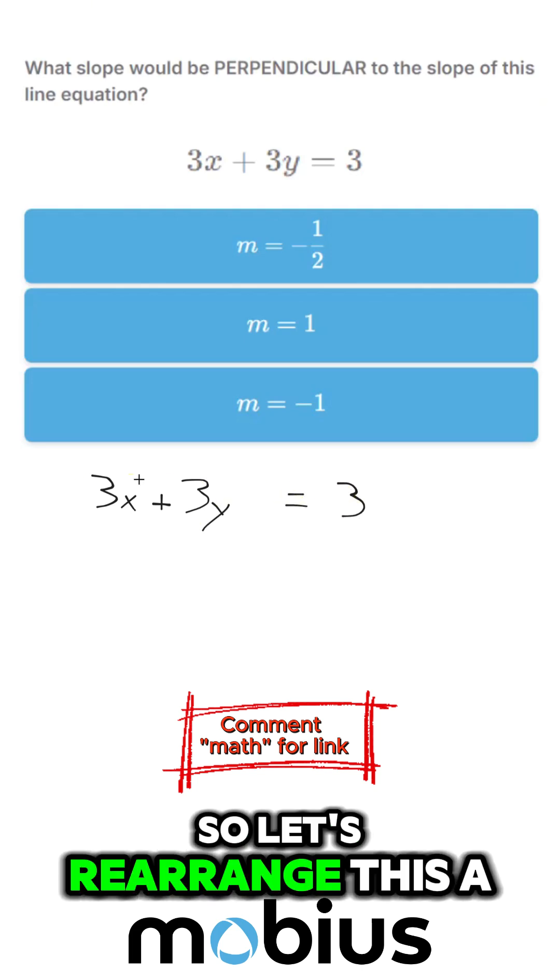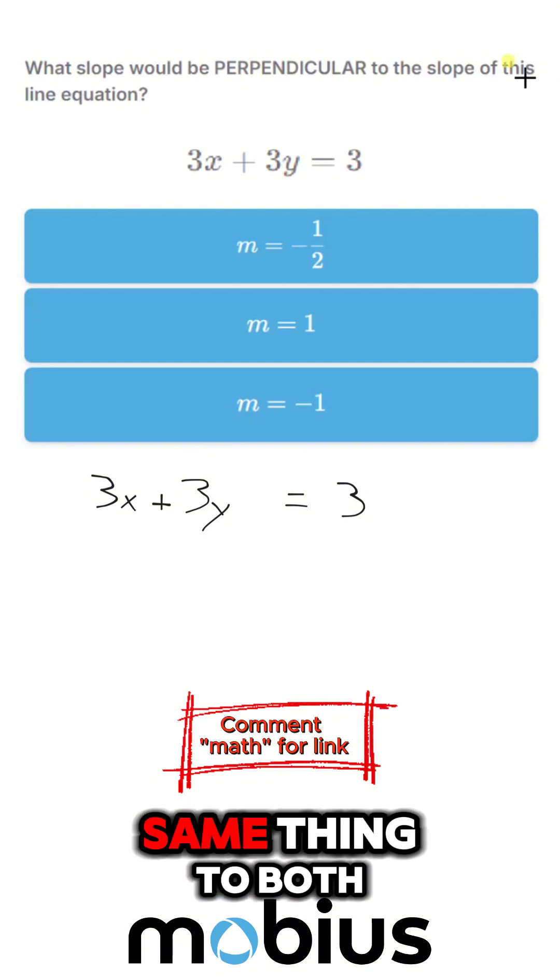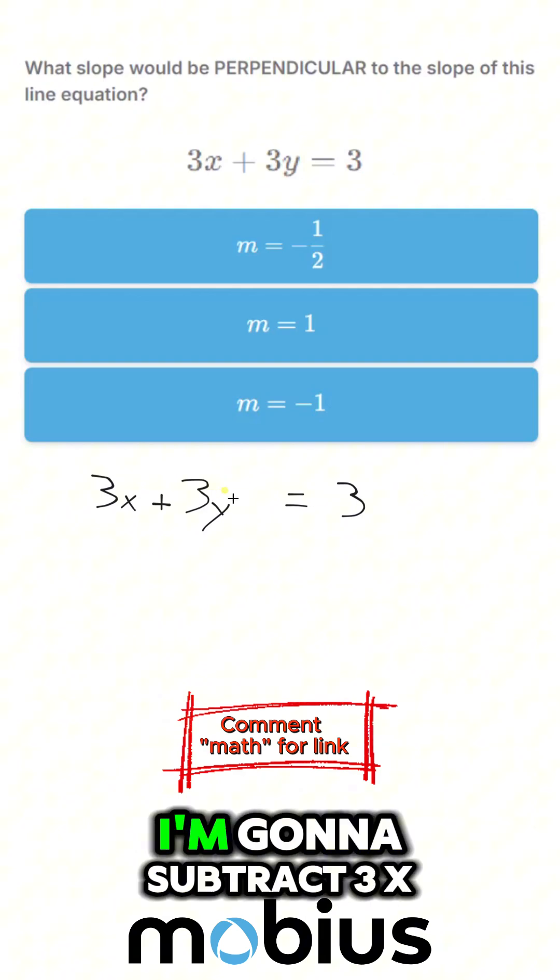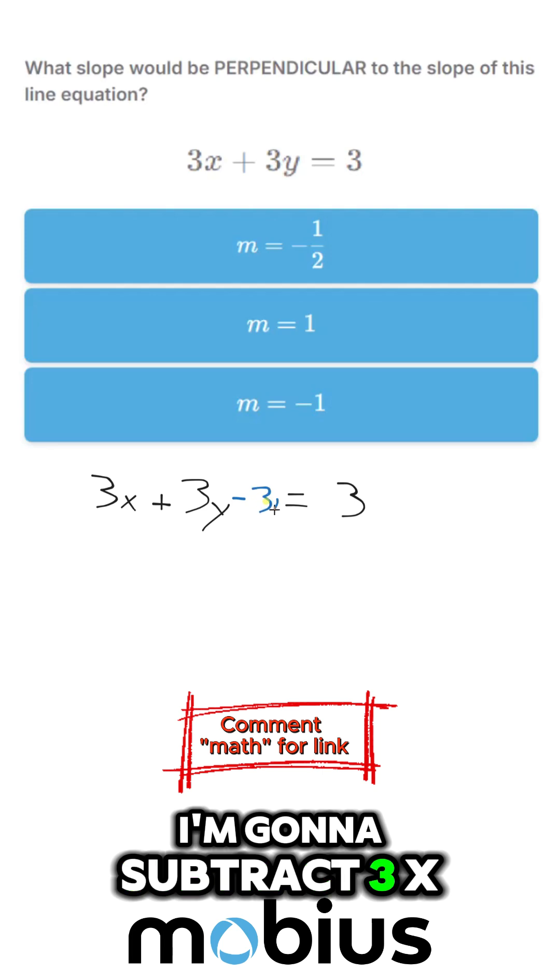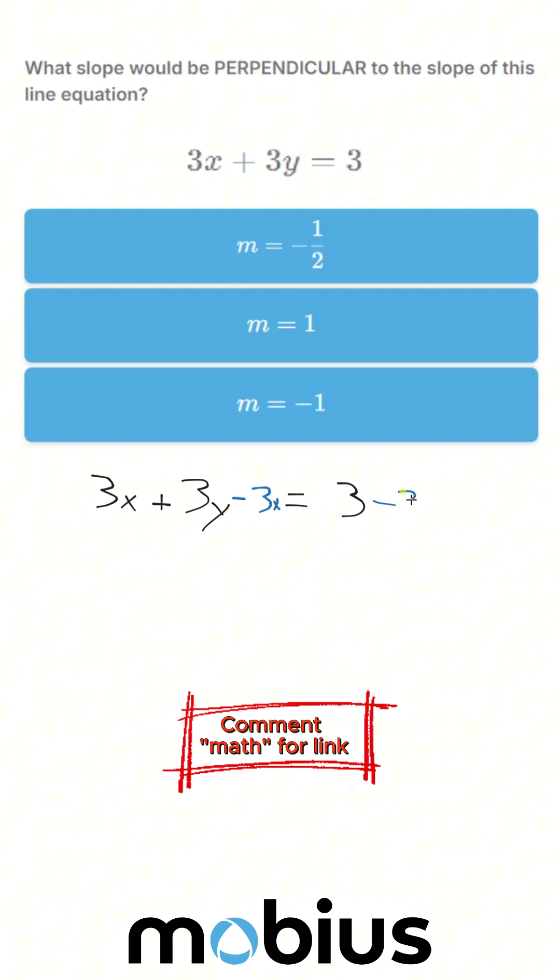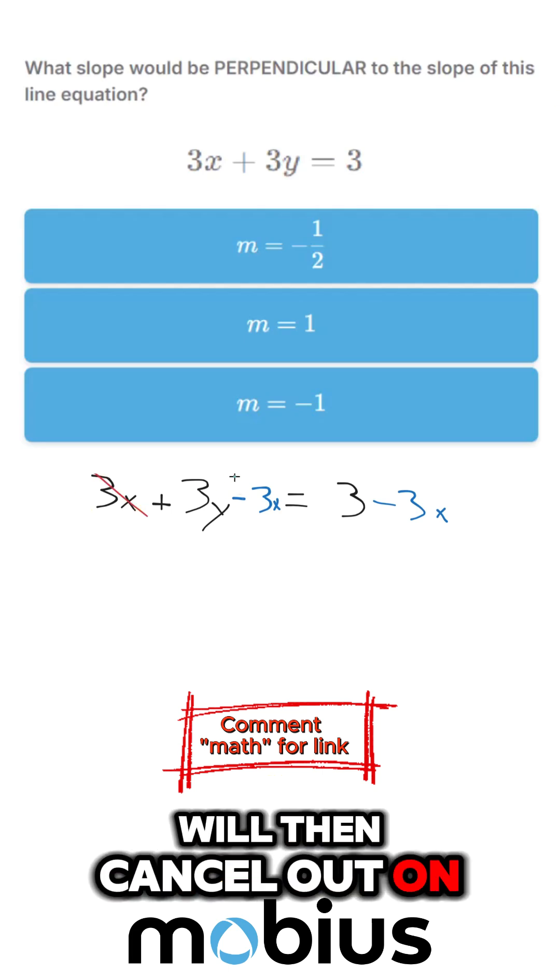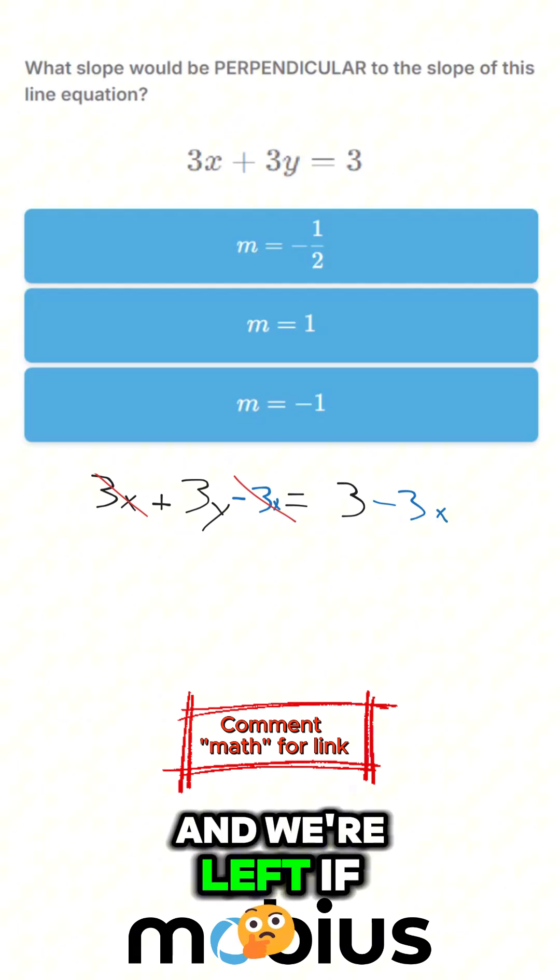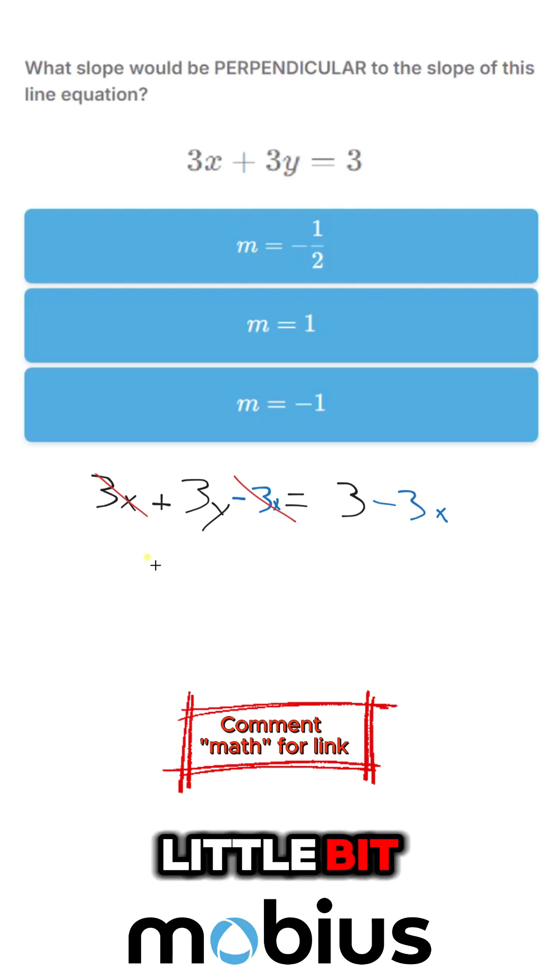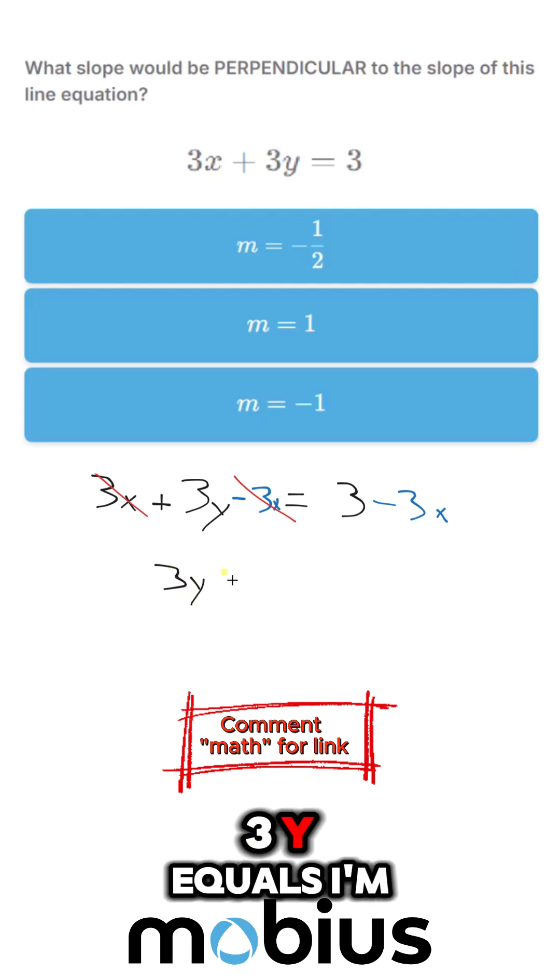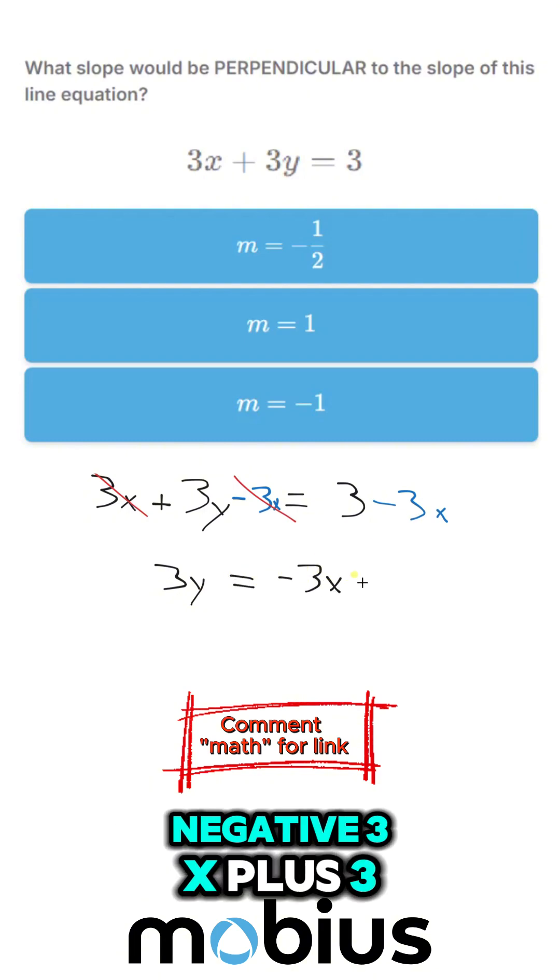So let's rearrange this a little bit. I'm going to subtract 3x from both sides here. Those will then cancel out on this side, and we're left, if I rewrite this a little bit, 3y equals, I'm going to move this to the front, negative 3x plus 3.